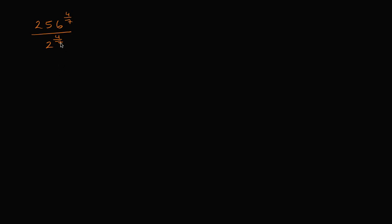At first you might find this kind of daunting, especially when you see something like two to the four-sevenths power — that's not going to be a whole number. How do I do this, especially without a calculator? The key is to see that we can use our exponent properties to simplify this so that we can do this on paper.